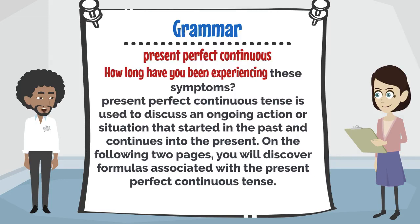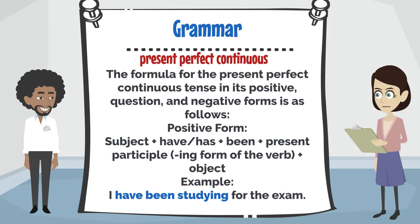How long have you been experiencing these symptoms? The present perfect continuous tense is used to discuss an ongoing action or situation that started in the past and continues into the present. On the following pages, you will discover formulas associated with the present perfect continuous tense. The formula in its positive, question, and negative forms is: positive form — subject + have/has + been + present participle + object. Example: I have not been studying for the exam.